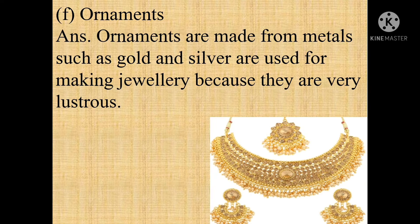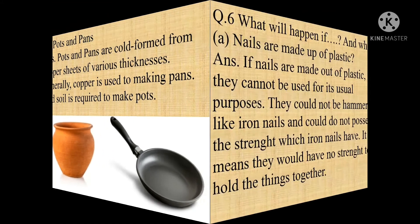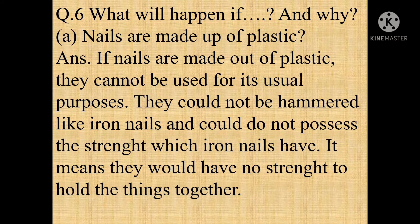G) Pots and pans. Answer: Pots and pans are cold-formed from copper sheets of various thicknesses. Generally, copper is used to make pans and soil is used to make pots. Question number 6: What would happen and why?